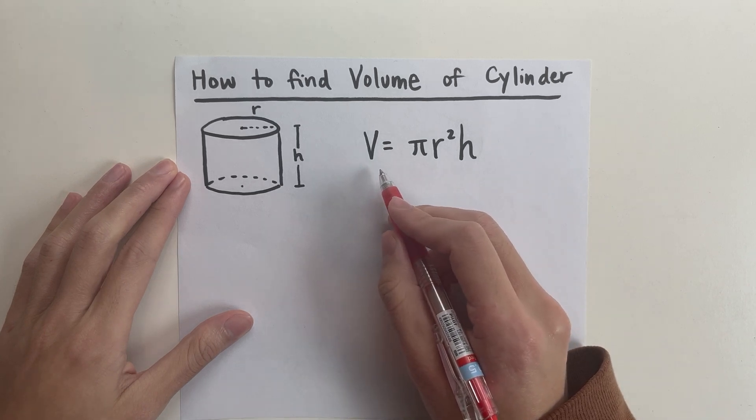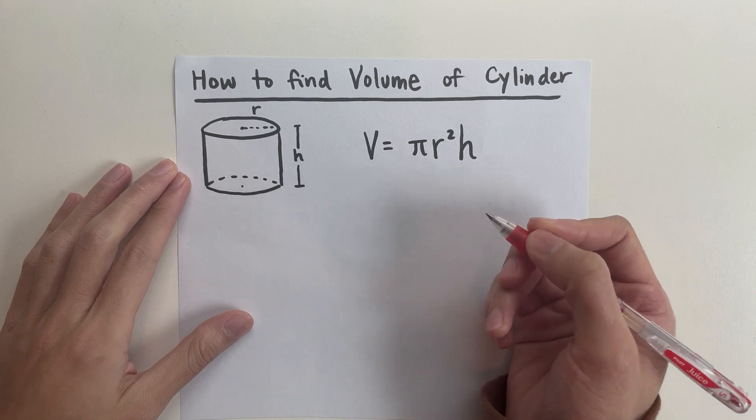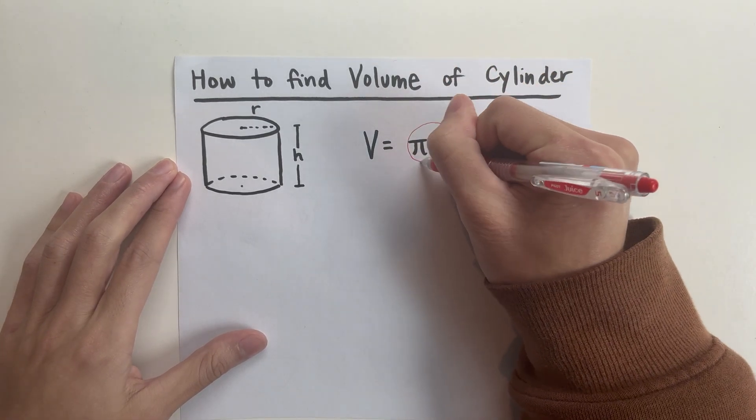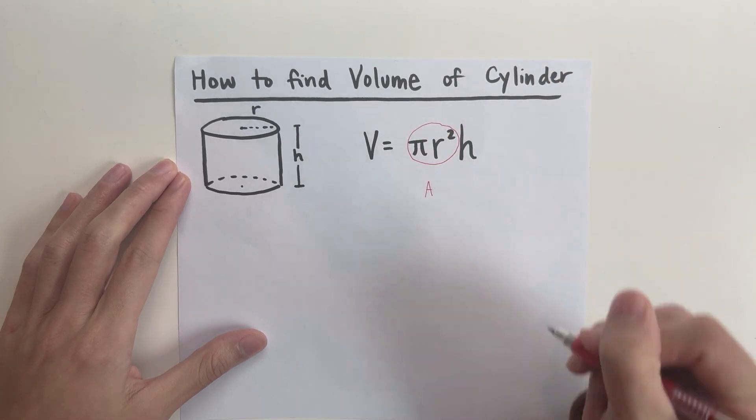Now the formula for the volume is V equals pi r squared h. Just to give you a more conceptual idea, I want you to notice that pi r squared right over here is actually the area of a circle.